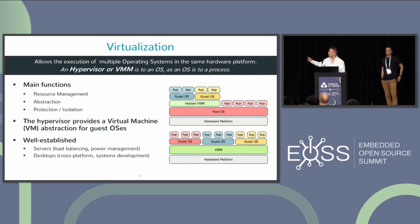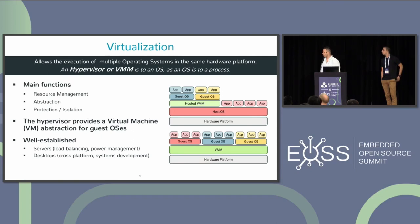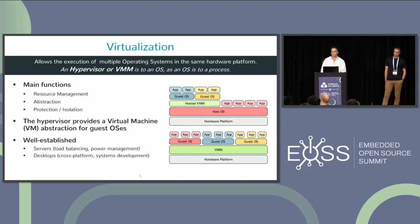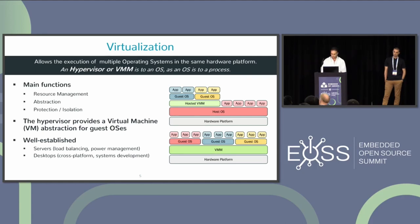There are typically two types of hypervisors: type 1 or bare metal, where the hypervisor runs directly atop the hardware platform; and on the upper side, we have the hosted or type 2 hypervisor, where the virtual machine monitor runs atop the operating system.